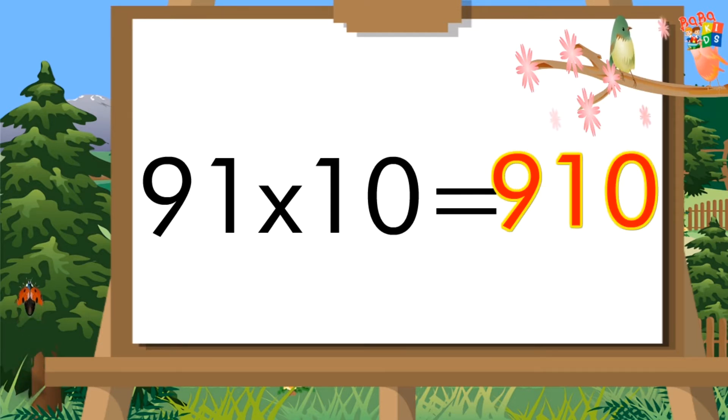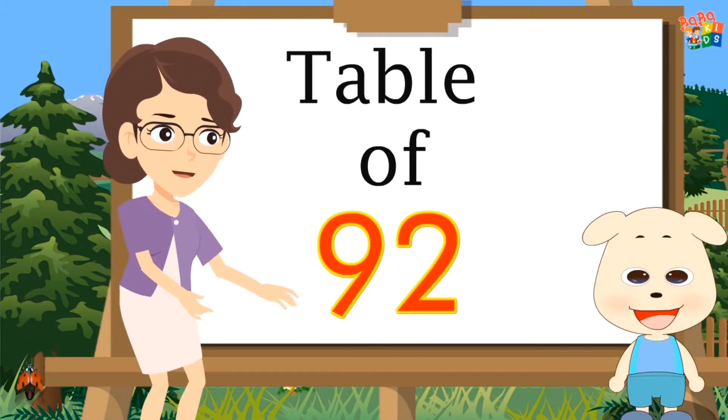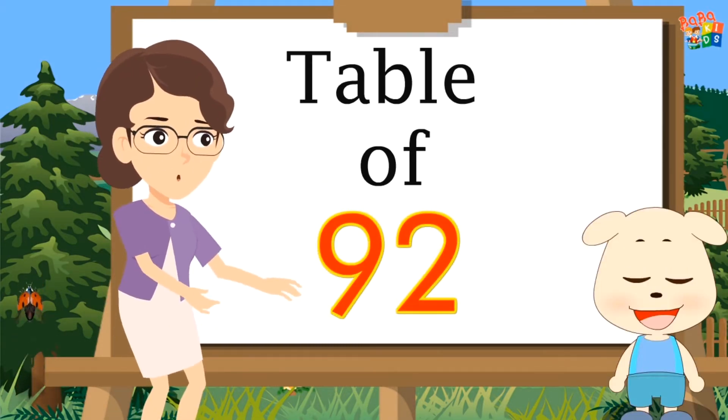Ninety-one eights are seven hundred twenty-eight. Ninety-one nines are eight hundred nineteen. Ninety-one tens are nine hundred ten. Table of Ninety-Two.